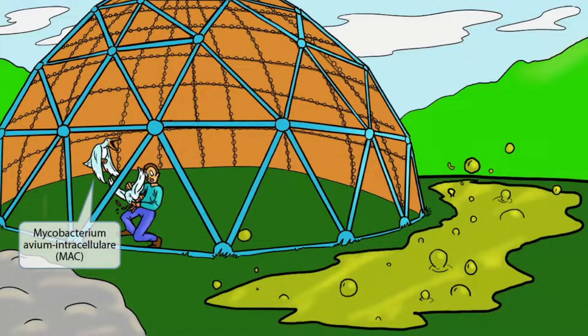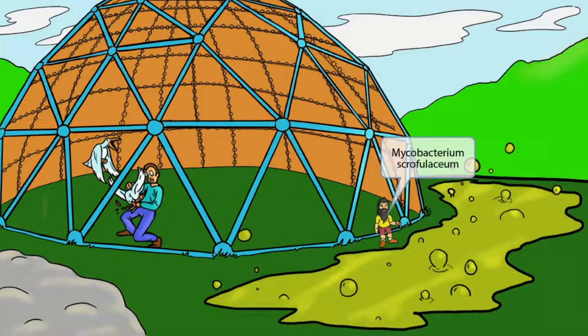This scene takes place at a zoo park with this guy inside of an aviary getting attacked by birds. Aviary sounds like avium, so this should help you remember that this part of the image is about Mycobacterium avium intracellulare.